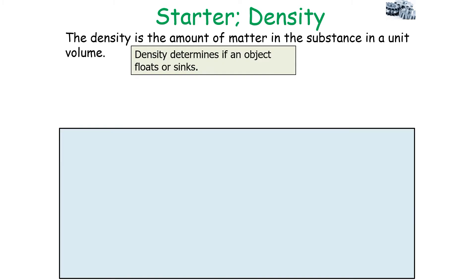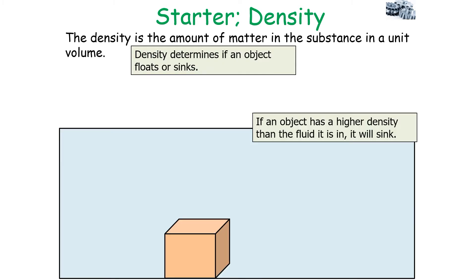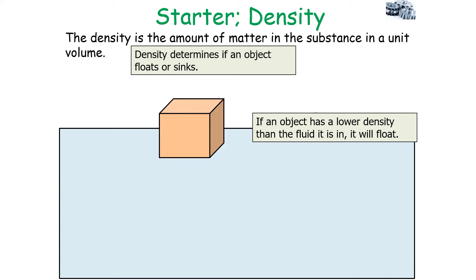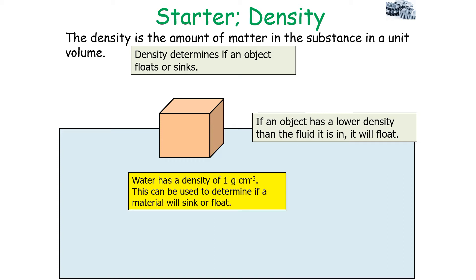Density determines whether an object floats or sinks. If an object has a higher density than the fluid it is in, it will sink. If an object has a lower density than the fluid it is in, it will float. It's important to note that water has a density of 1 gram per centimetre cubed, and that 1 centimetre cubed of water has a mass of 1 gram.